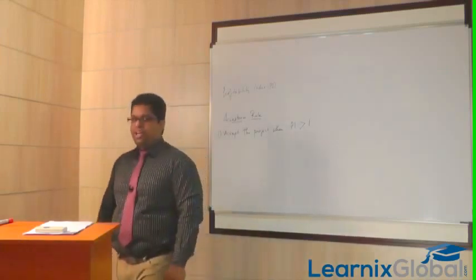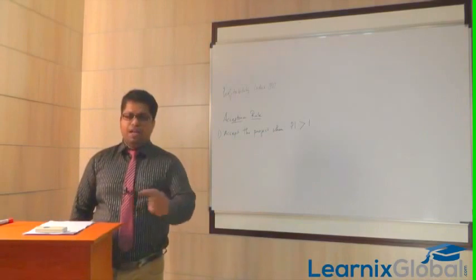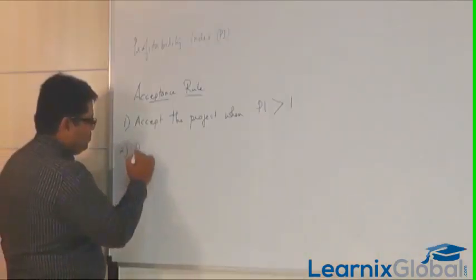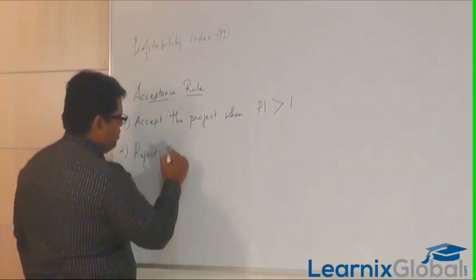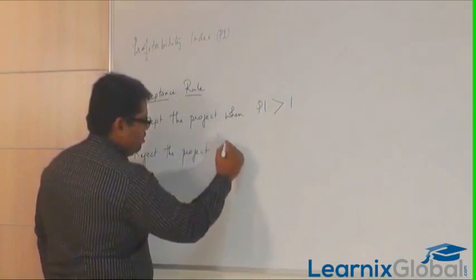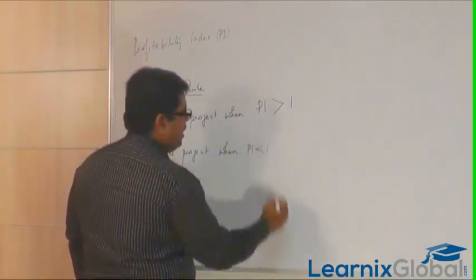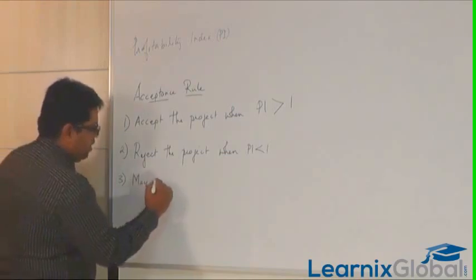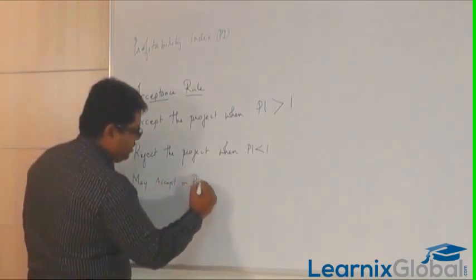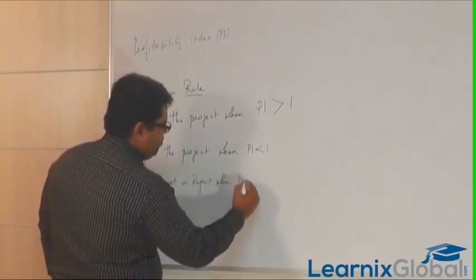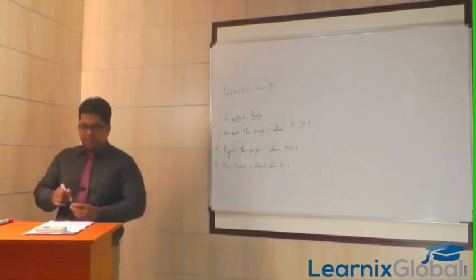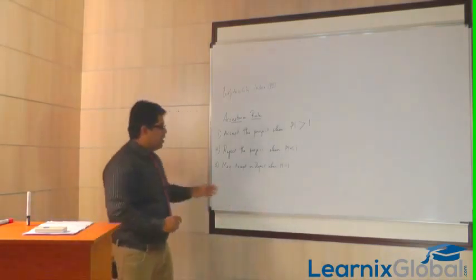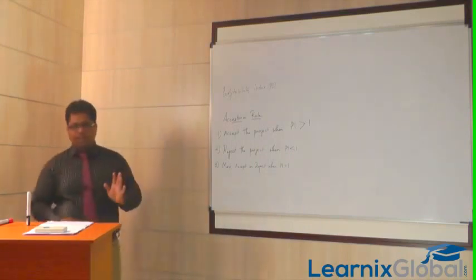When you calculate the profitability index of a project, you will get an answer that is either greater than one, less than one, or equal to one. Accept it when it is greater than one. Reject the project when profitability index is less than one. You may accept or reject when PI is equivalent to one. These are the acceptance rules of profitability index.